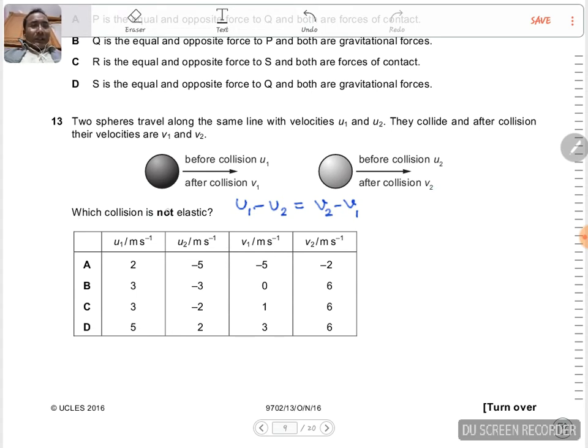Let us remember that during elastic collision we have this special equation. It says that the relative velocity of approach before collision is equal to the relative velocity of separation after collision. If this thing applies then it is elastic collision, and if this does not apply it is not an elastic collision.